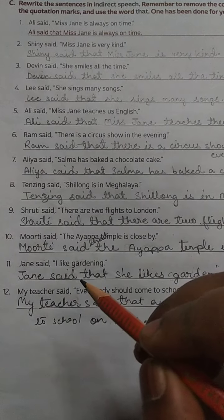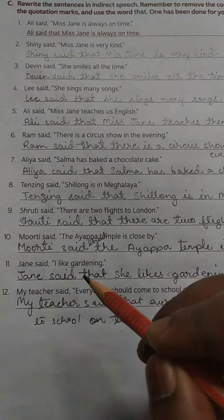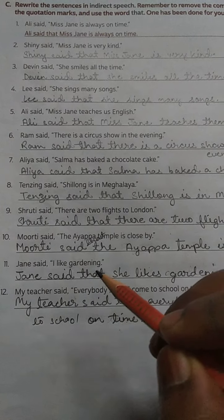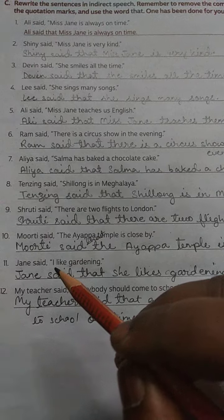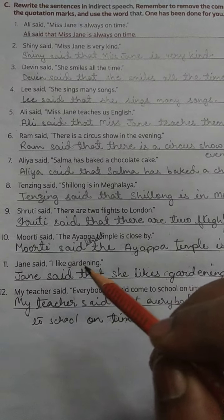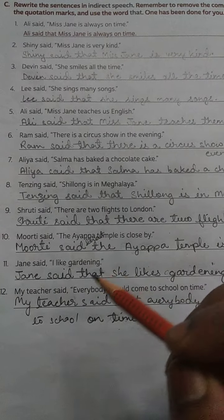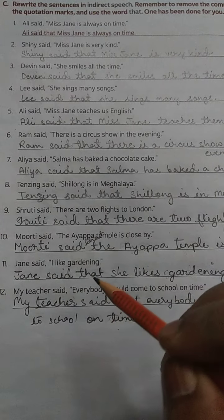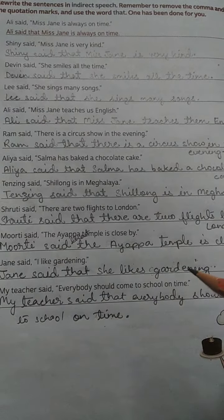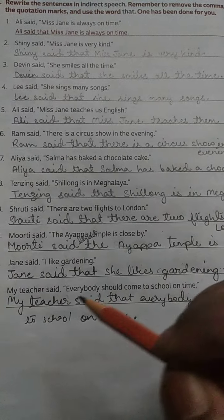Number 11. Jain said, comma, inverted commas open, I like gardening, inverted comma closed. Answer: Jain said that she likes gardening, full stop.